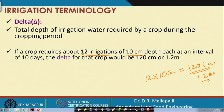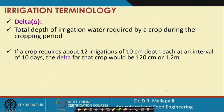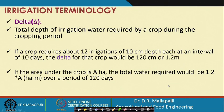If the area under the crop is A hectares, the total water required would be 1.2 × A over the base period of 120 days, which is a straightforward calculation.